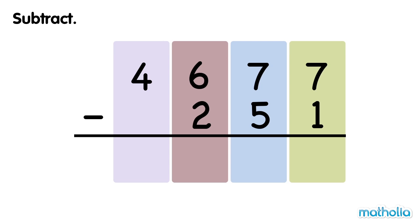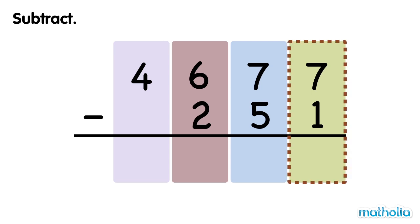Subtract. Let's find 4,677 minus 251. Start by subtracting the ones. 7 ones minus 1 one equals 6 ones.